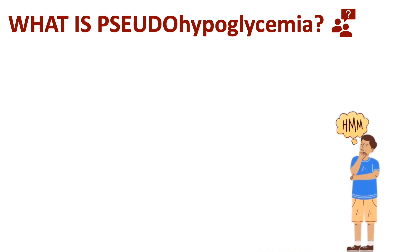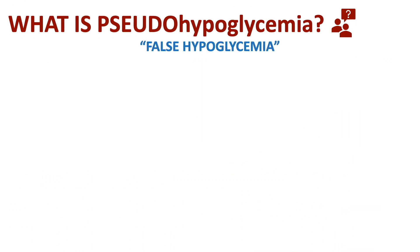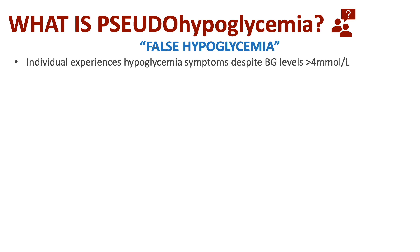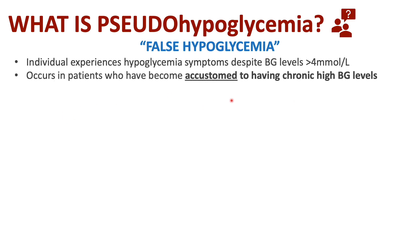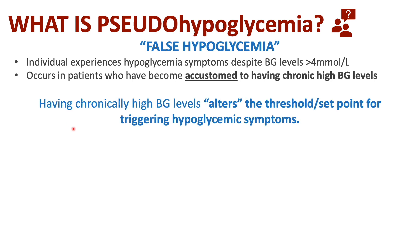So what is pseudohypoglycemia? One way to think of this is that it's a false hypoglycemia, in that the individual experiences hypoglycemic symptoms even though their blood glucose levels are greater than 4 millimoles per liter. This usually occurs in patients who have become accustomed to having chronic high blood glucose levels. Having these chronically high blood glucose levels alters the threshold or set point for activating these hypoglycemic symptoms.